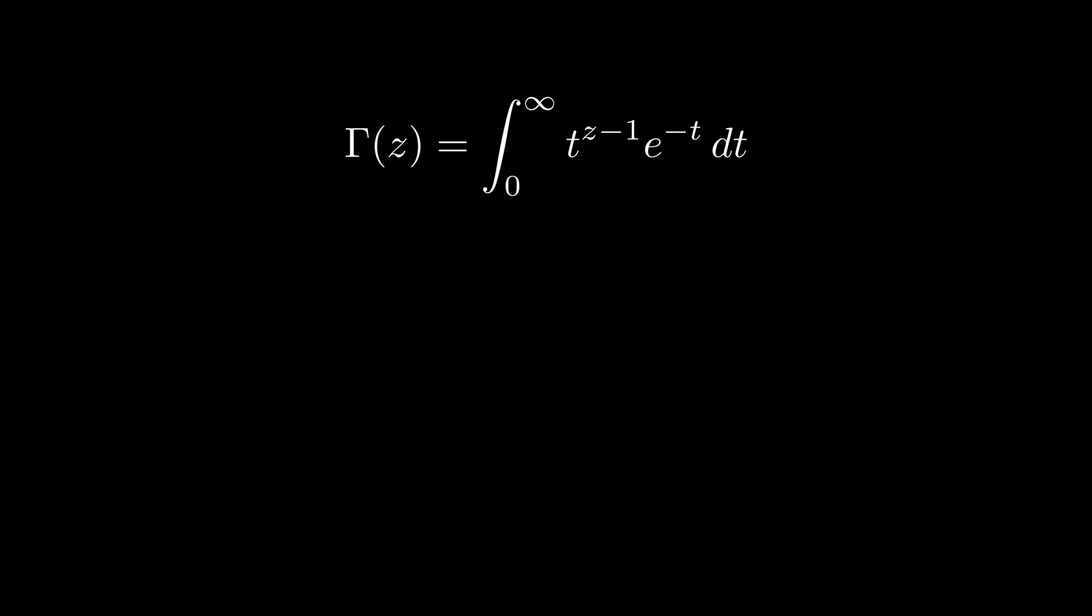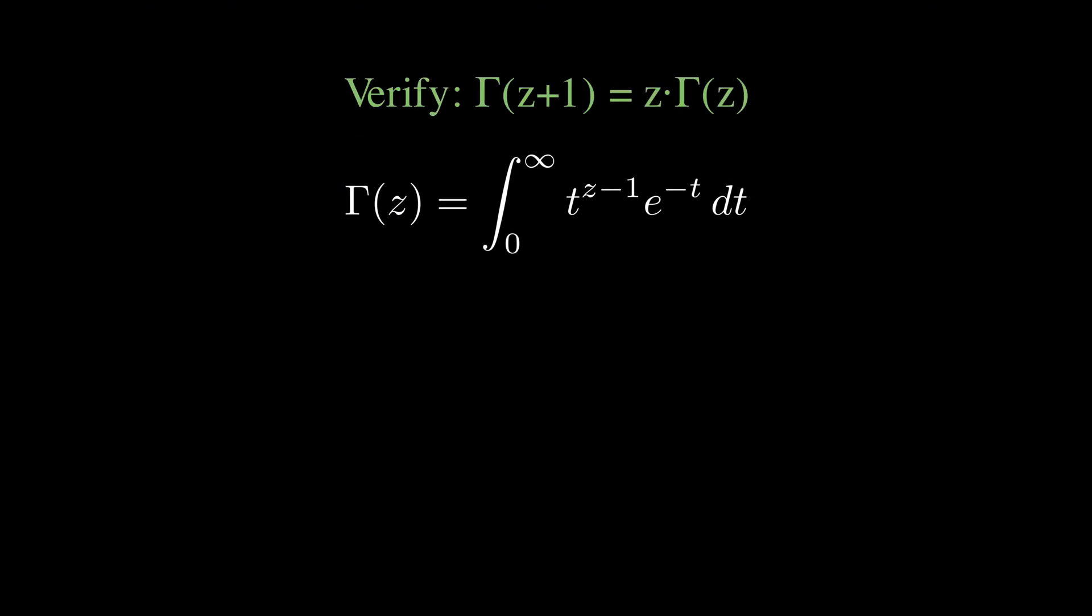To see why this gamma function actually works, let's verify that it really does satisfy our key property. We want to show that gamma of z plus 1 equals z times gamma of z, and we can do this with a technique called integration by parts.